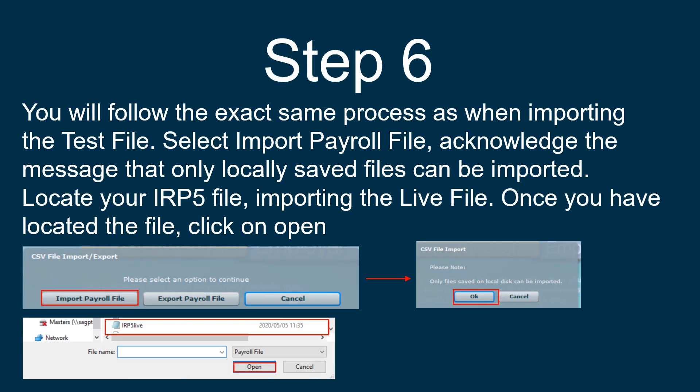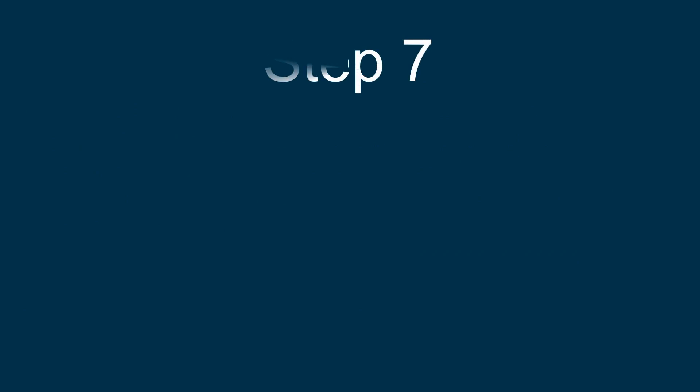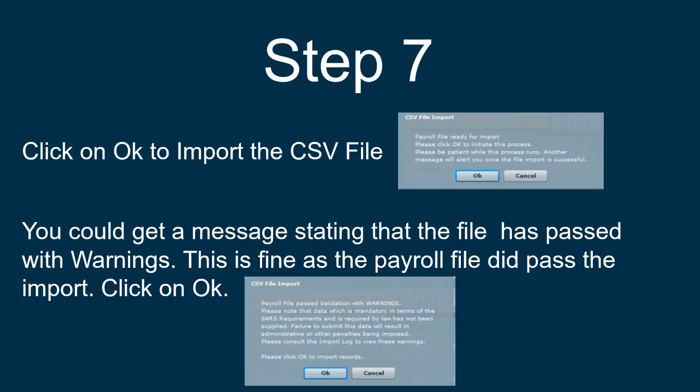You will follow the exact same process as when importing the test file. This time you will just look for the live file, and again acknowledge the message that only locally saved files can be imported. Once you have located your live file, just click on Open. Click on OK to import the CSV file.